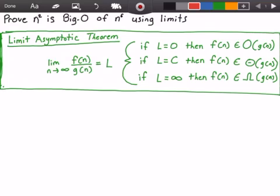Now if our limit L is equal to C, where C is some constant value that's greater than zero, then our function f of n belongs to Big Theta of g of n. And if our limit L equals infinity, then our function f of n belongs to Big Omega of g of n.